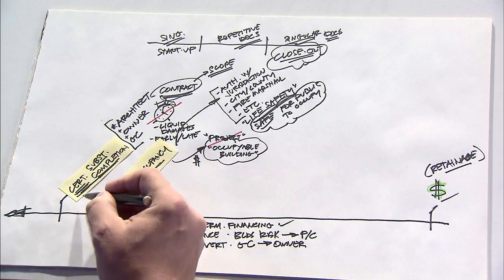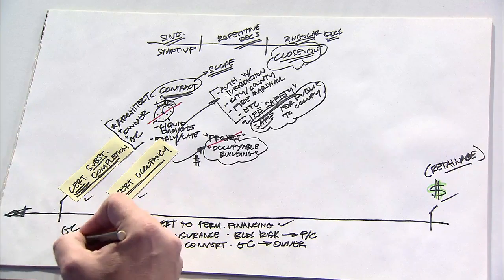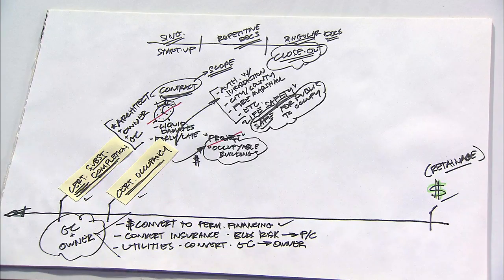So as you can see, as a function of these two documents, there are a lot of things that happen that are of great deal of interest to both the contractor and the owner as it relates to shifts of risk, changes in financial terms, and the ability to use the building for its intended use.